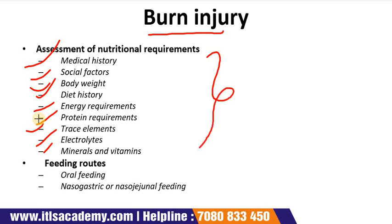Feeding route must also be decided — whether oral, nasogastric, or nasojejunal. In oral feeding, well-nourished patients with no confusion, facial swelling, or bony injury, oral nutrition using food and supplement drinks is usually successful. Nasogastric or nasojejunal feeding is necessary in patients with burns of greater than 20%; the target is to commence within 4 hours of admission. If gastric stasis develops, nasojejunal feeding is usually successful. Total parenteral feeding is rarely used due to the risk of infection.